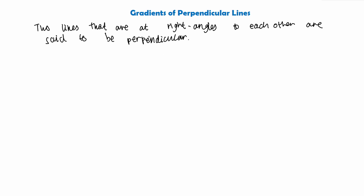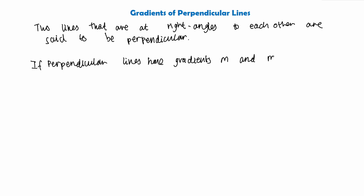Now we can use this definition of perpendicular lines to come up with a formula about the gradients of perpendicular lines. If perpendicular lines have gradients, we'll call the gradient of the first line m, and the gradient of the second line m with a subscript that looks like an upside-down t — which resembles those perpendicular lines we drew. So m-sub-perp means the gradient of the perpendicular line.